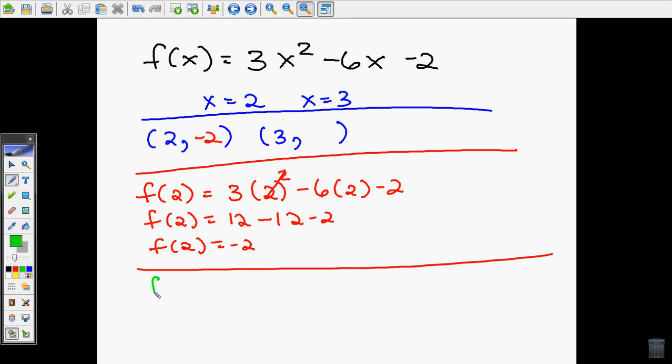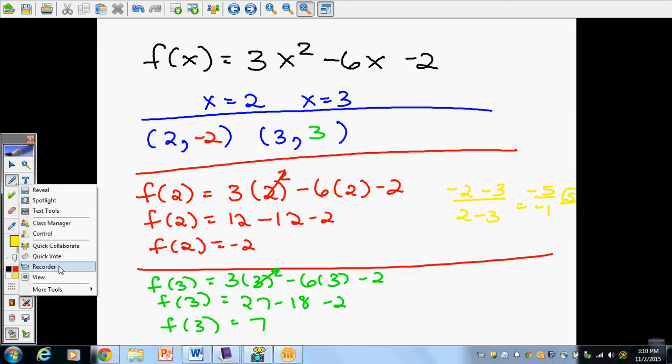Now let's do f of 3. It's going to be 3 times 3 squared minus 6 times 3 minus 2. So f of 3 is 3 squared is 9, 9 times 3 is 27, minus 18 minus 2. 27 minus 18 is 9, 9 minus 2 is 7, so it is 3 comma 7. So to find the rate of change, you're going to subtract: difference of my y's over difference of my x's, so I end up with negative 5 over negative 1, which simplifies to 5. So the rate of change here for this function is 5.